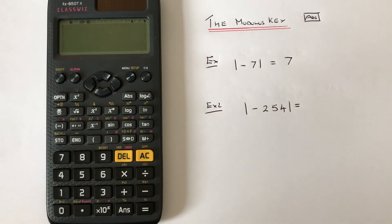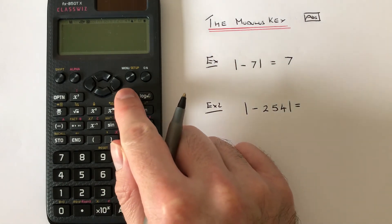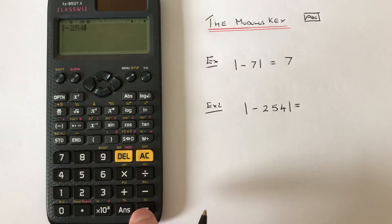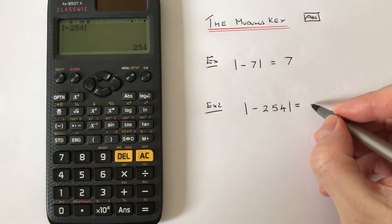If we press ABS minus 254, press equals, and we get the answer 254.